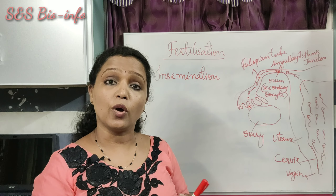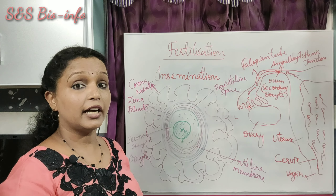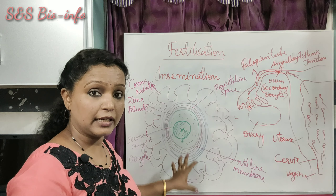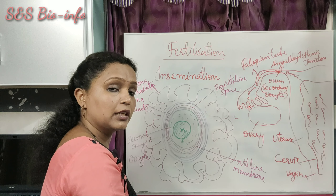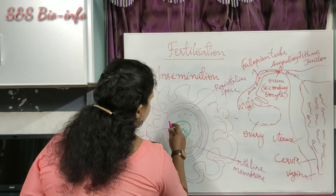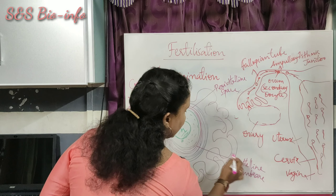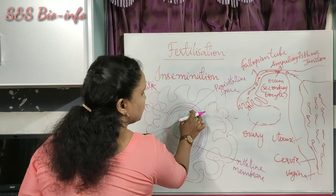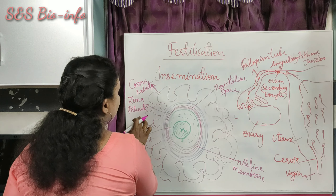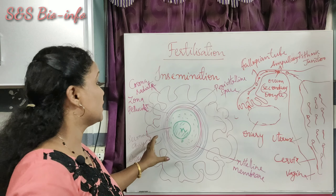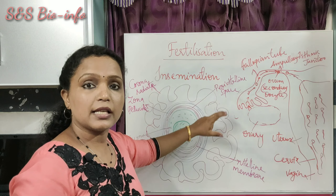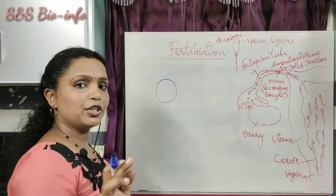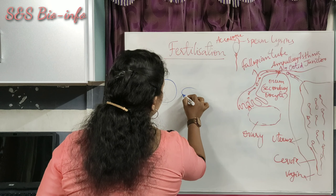What is the structure of the ovum when it reaches the ampullary-isthmic junction for fertilization? This is the structure of the secondary oocyte. The green part represents the haploid ovum, which carries the chromosomes of the mother. It is protected by a membranous covering called the vitelline membrane, and between the vitelline membrane and the plasma membrane there is a perivitelline space. It is further protected by the zona pellucida, and it has supporting cells known as the corona radiata.